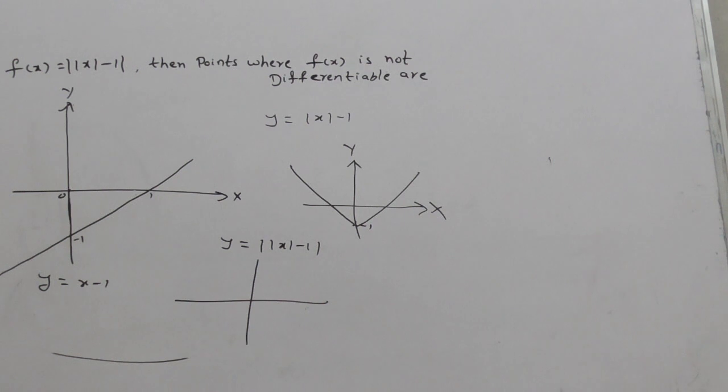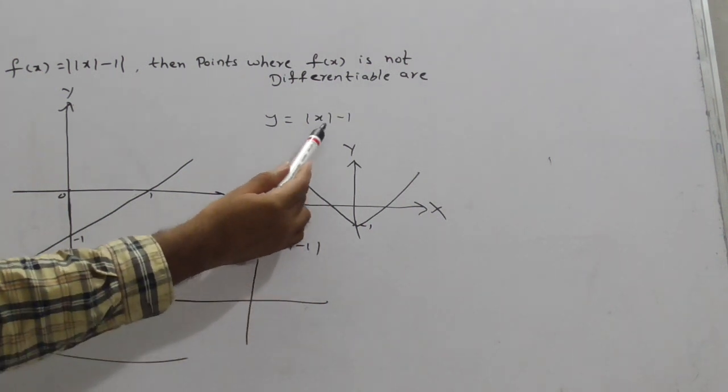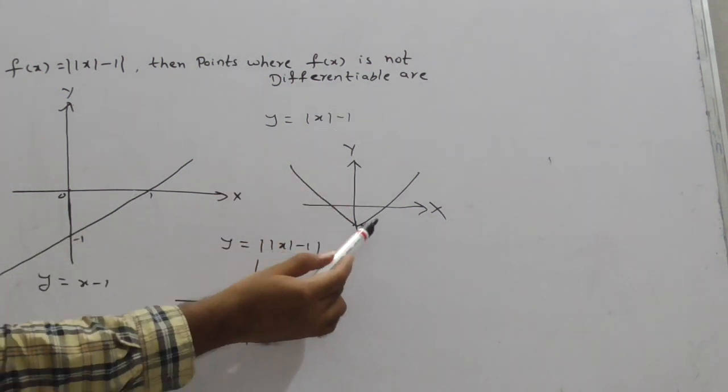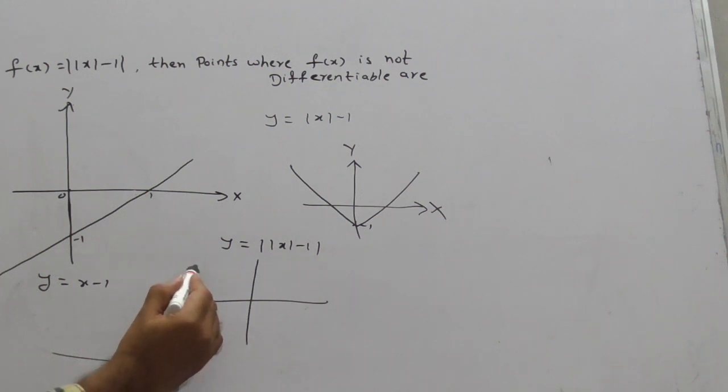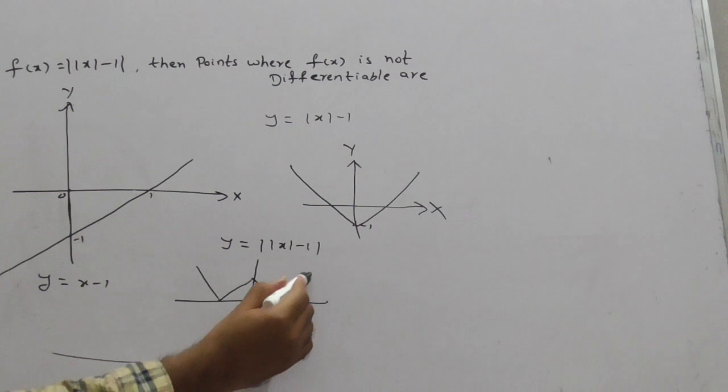How to draw this? Simple technique: in y equals |x - 1|, this negative area simply goes up, like this.